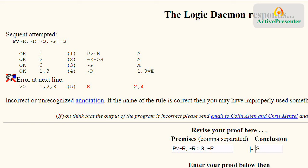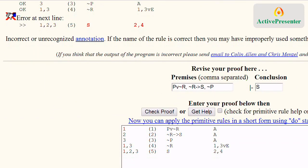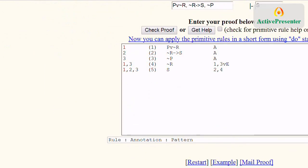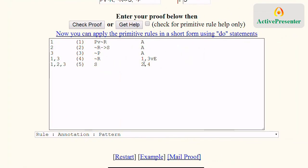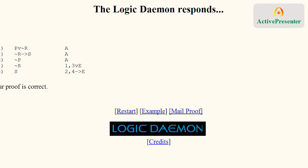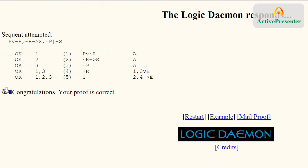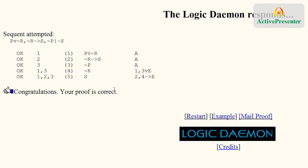So I know what I did. I come back, put the two lines, but I didn't put the rule, which is arrow elimination. So I fill that in, check proof again. Congratulations, your proof is correct.